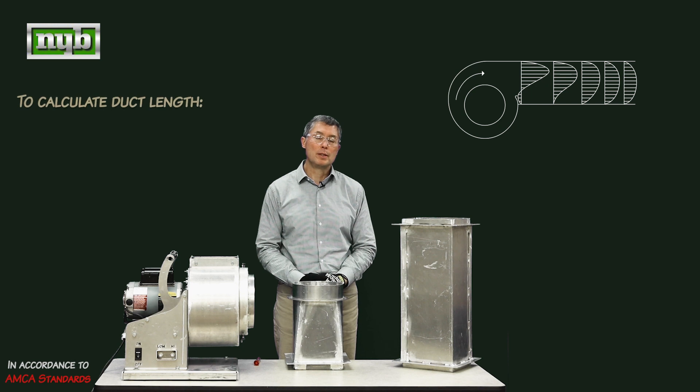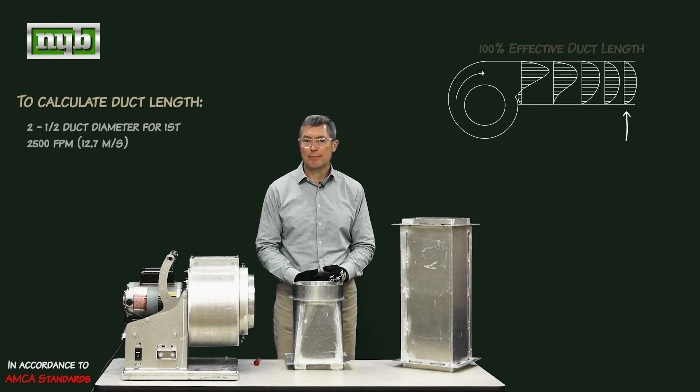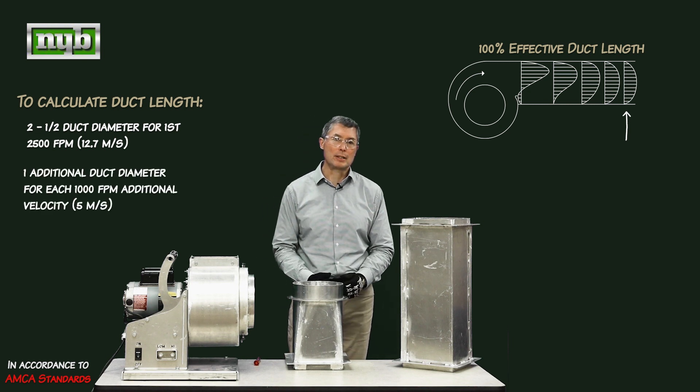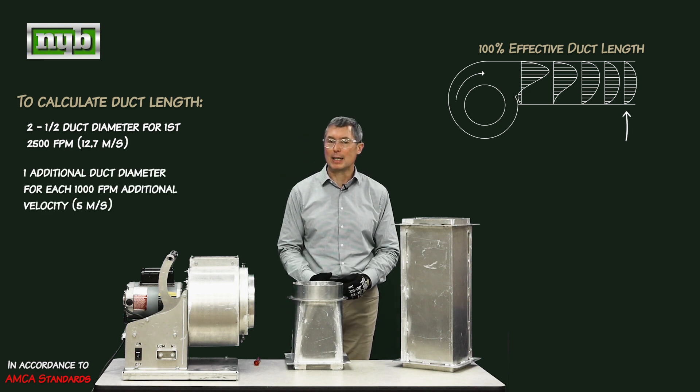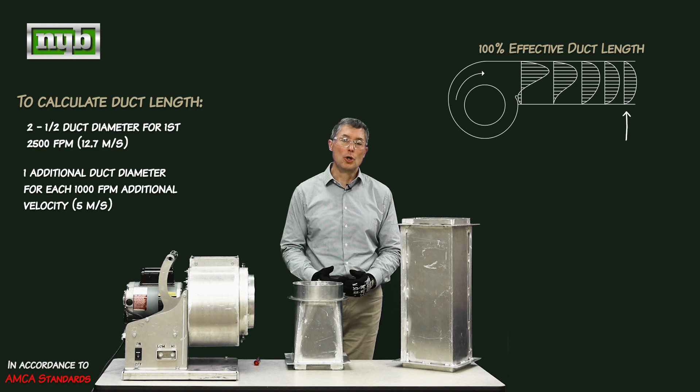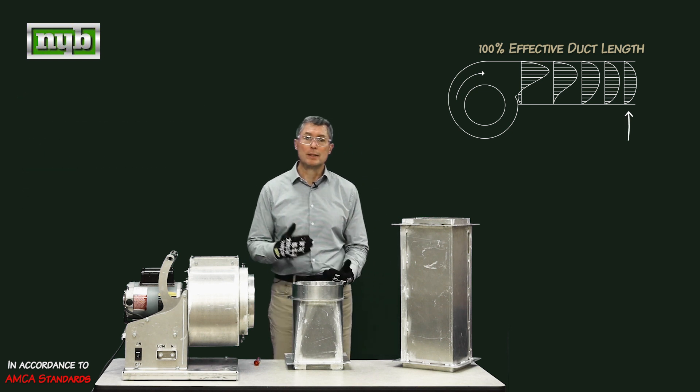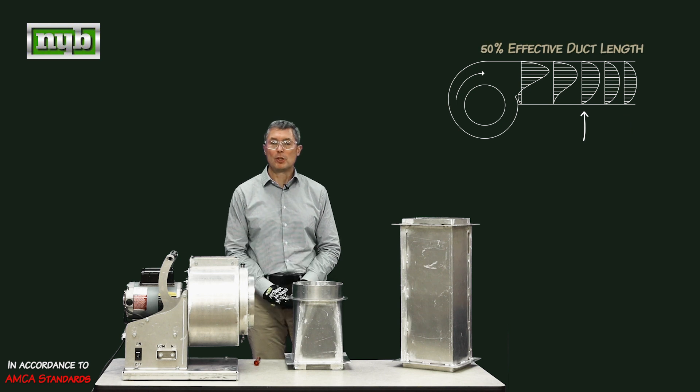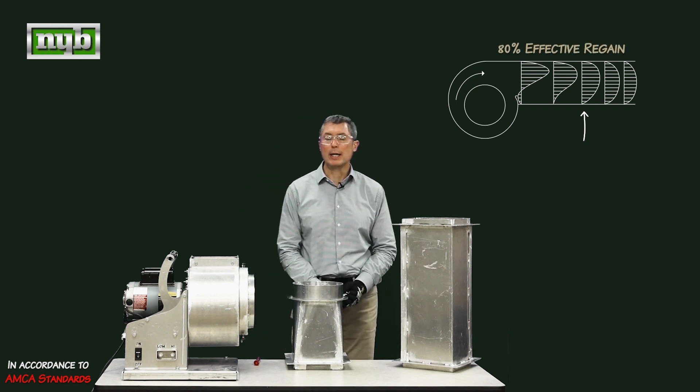AMCA Standard 201 shows or tells us that we need to have two and a half duct diameters for the first 2,500 feet of velocity, an additional duct diameter for each thousand feet of velocity on top of it. It also shows in the graph or the diagram that if you have 50 percent of your effective duct length you're going to get about 80 percent of your regain.